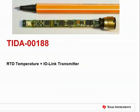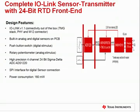The RTD temperature plus IO-Link transmitter TI design offers a rapid prototyping platform for IO-Link sensor transmitters. The system is programmed with a fully validated IO-Link stack, leveraging a fully validated IO-Link PHY. It comes by default with a switch emulating digital input, two LEDs for status indication, and a potentiometer emulating an RTD — all fitting in a 6mm wide PCB compatible with the industry standard M12 connector.